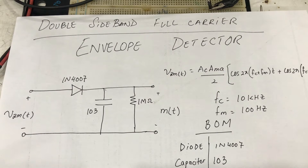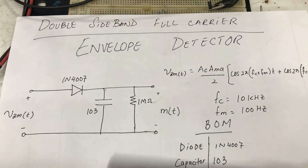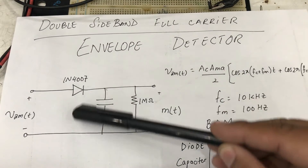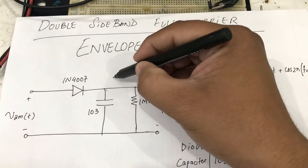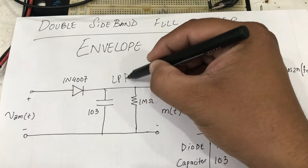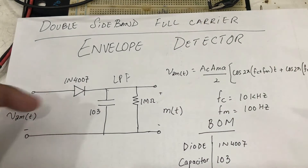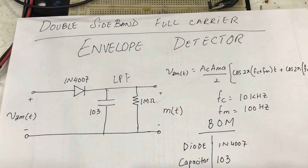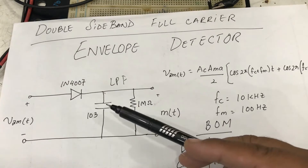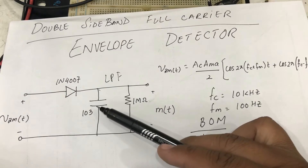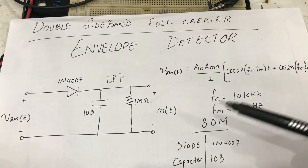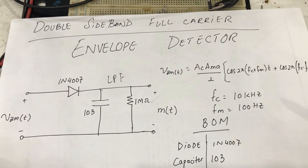All you need is a diode, a capacitor, and a resistor. This network — the capacitor and resistor — is acting as a low-pass filter. This is a normal diode you can easily find. This is a ceramic capacitor without any polarity, so note there's no polarity marking on the capacitor symbol. And I have a one megaohm resistor.